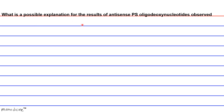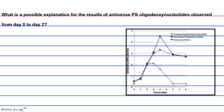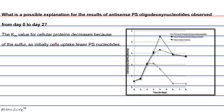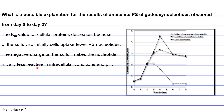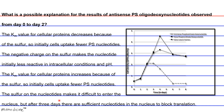Question: What is a possible explanation for the results of antisense PS oligodeoxynucleotides observed from day zero to day two? A) The Km value for cellular proteins decreases because of the sulfur, so initially cells uptake fewer PS nucleotides. B) The negative charge on the sulfur makes the nucleotide initially less reactive in intracellular conditions and pH. C) The Km value for cellular proteins increases because of the sulfur, so initially cells uptake fewer PS nucleotides. D) The sulfur on the nucleotides makes it difficult to enter the nucleus, but after three days there are insufficient nucleotides in the nucleus to block translation.